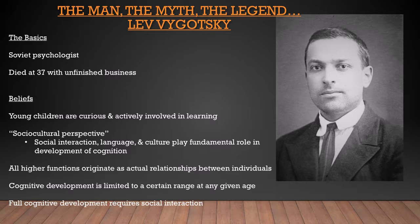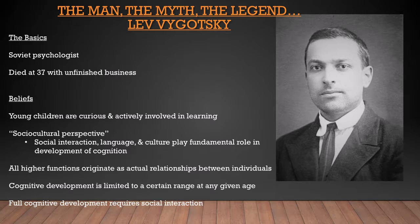Lev firmly believed that young children were curious and they were actively involved in their own learning. This is something that he and Piaget actually agreed on, which is very uncommon because they did not agree on pretty much anything. He had a perspective of sociocultural interaction and learning, which basically states that language, culture, and society are going to develop our cognitive levels, and without them it's not fully possible. Full development of our cognition requires these things, especially social interaction. He even goes as far as to say that any single higher-order mental functioning we have is a result of a relationship or interaction we had as a child.